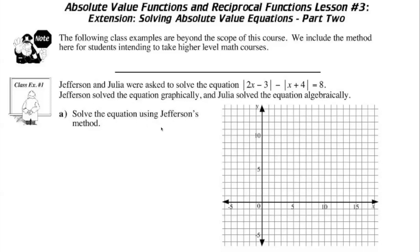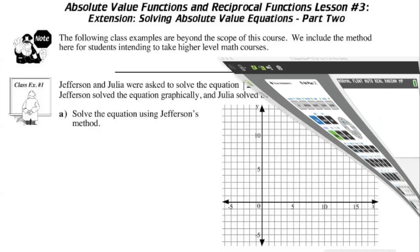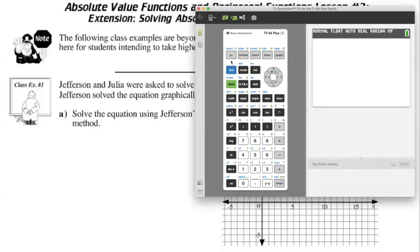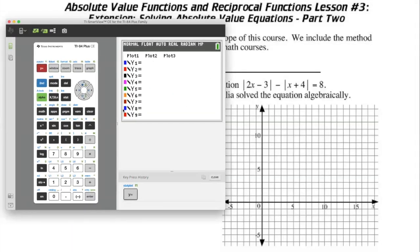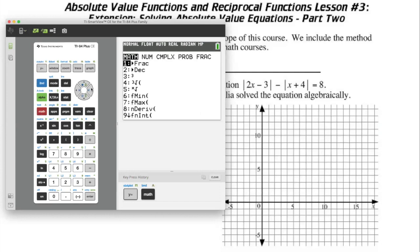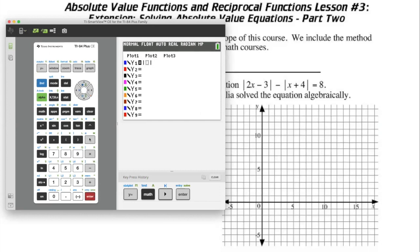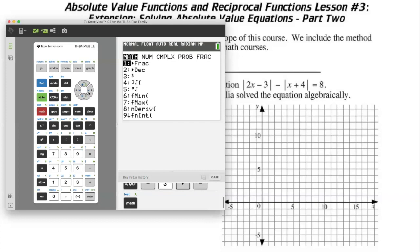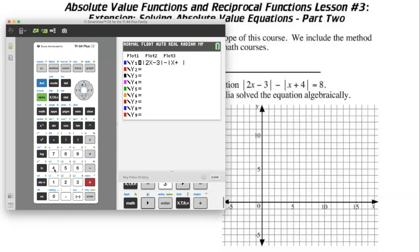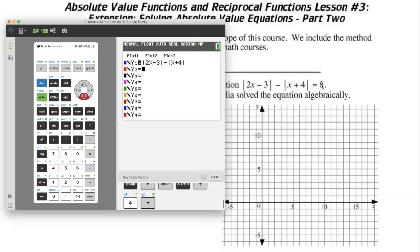We're doing Jefferson's method here, so let's pull up a graphing calculator. For y1, let's enter the absolute value of 2x minus 3. To find the absolute value, press math and move over to the number column — abs stands for absolute value. So we enter 2x minus 3, then subtract the absolute value of x plus 4. For y2, which is the right side of the equation, that equals 8.